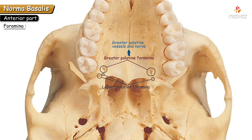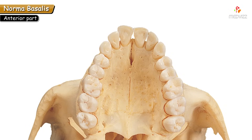The lesser palatine foramina are tiny — around one to three foramina — located just behind the greater palatine foramen on each side, near the pyramidal process of the palatine bone. They transmit the lesser palatine vessels and nerves. To remember: the greater palatine foramen transmits greater palatine vessels and nerve, and the lesser palatine foramen transmits lesser palatine vessels and nerves.